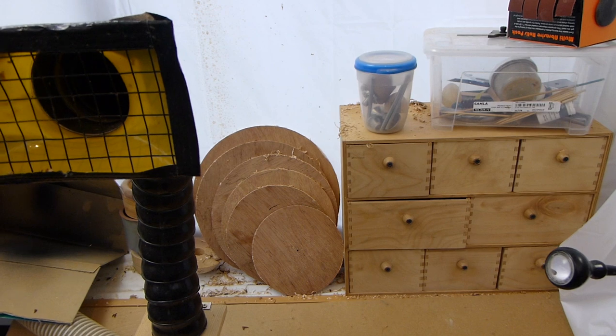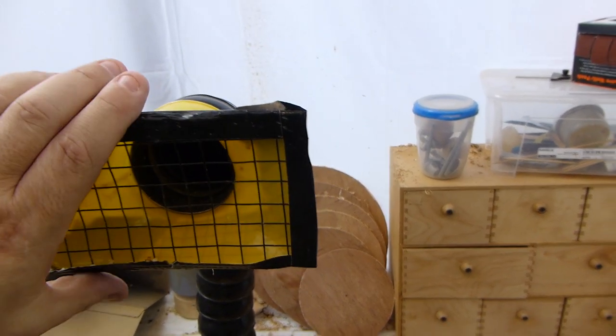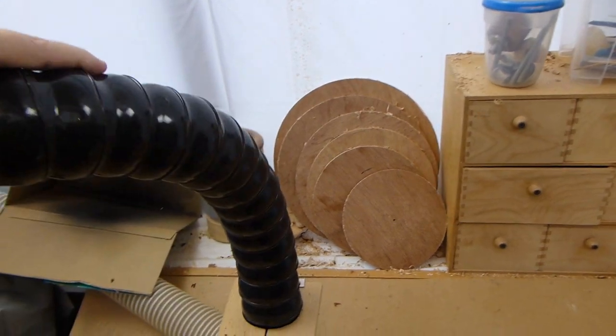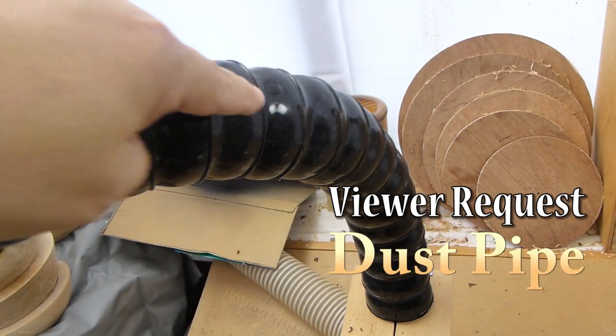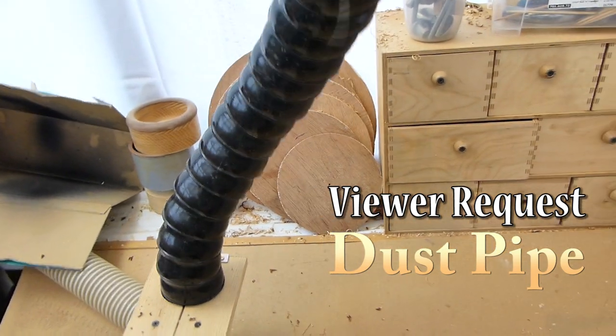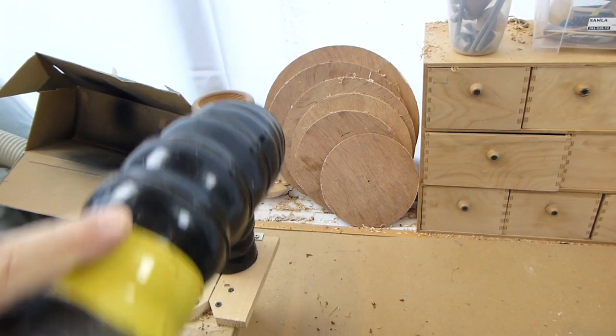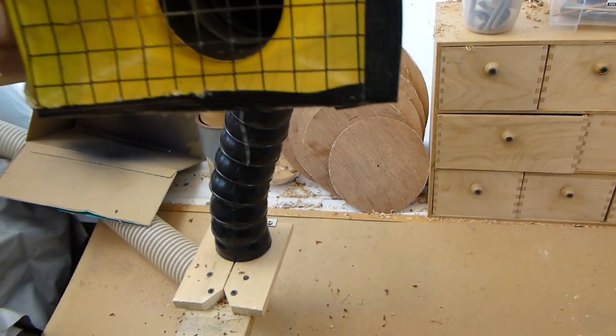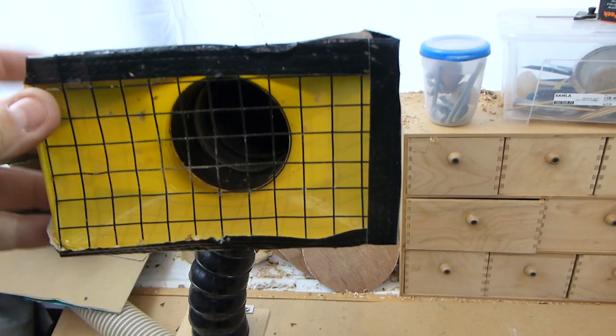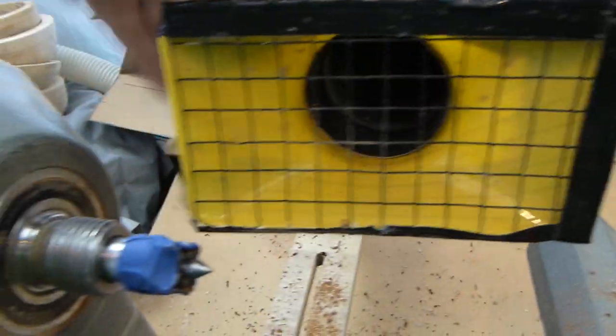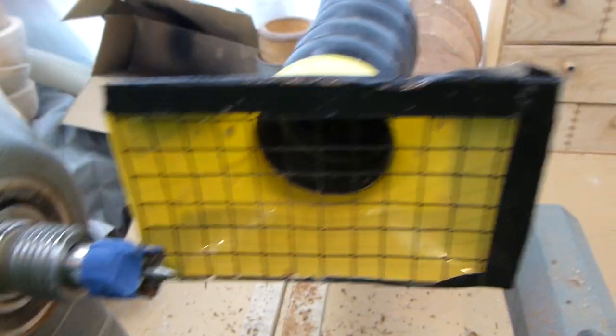This pipe came from a supplier in the UK called Axminster. As you can see, it's made up of lots of little disks, little tiny pipes, and that allows it to move in so many different directions. It's really flexible and yet firm at the same time. The dust port on the end isn't overly large, but the advantage of being so flexible is I can move it right up to the work, so it can be small.